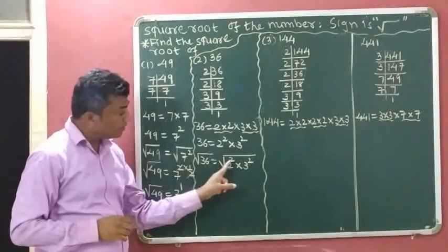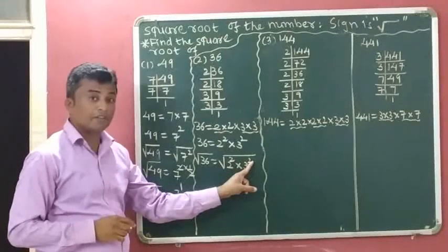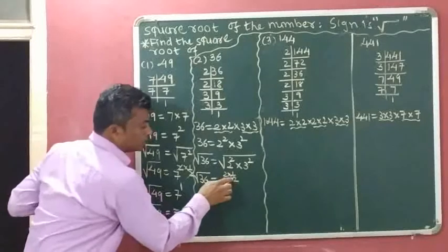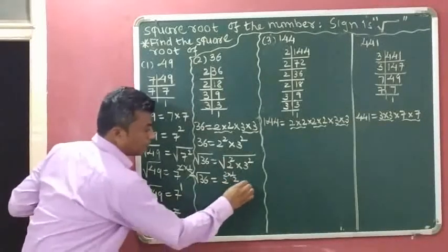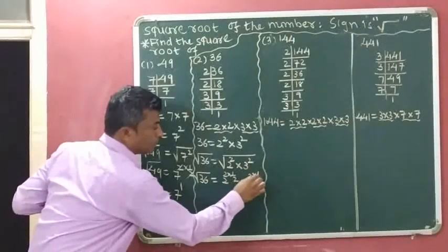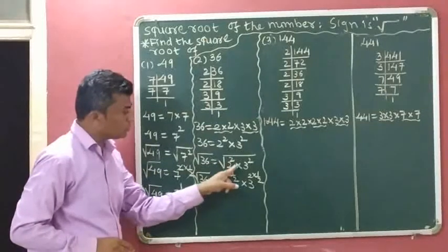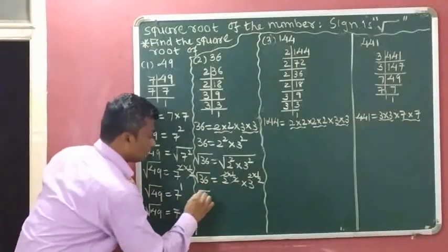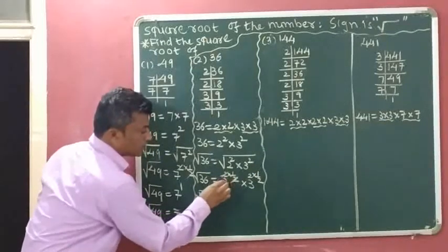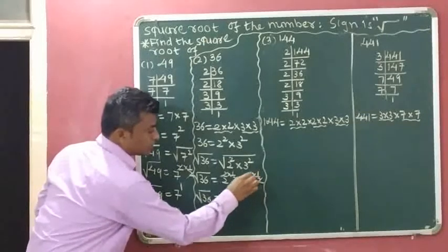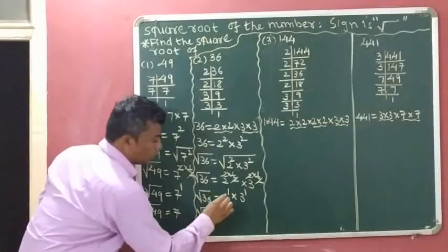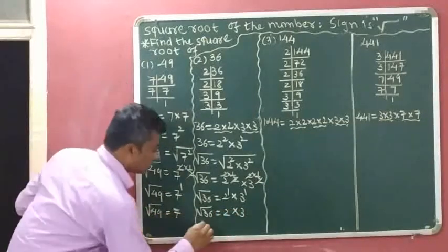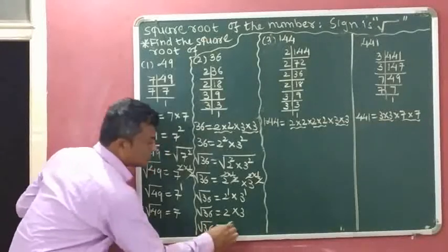Square root means 1 half. So we multiply 1 half with the exponent 2 in 2 squared and with the exponent 2 in 3 squared. The 2s cancel in both terms, giving us 2 to the power of 1 multiplied by 3 to the power of 1. That means 2 times 3, which equals 6. So the square root of 36 is 6.